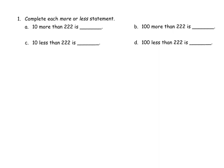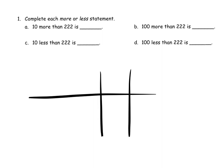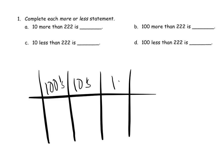So here it says complete each more or less statement. So we have 10 more than 222. The idea would be, we don't want necessarily for students to have to literally draw this out. But here's their 100s column, here's the 10s column, here's the 1s column. We could start off by modeling 222, and then 10 more would mean we would simply add one additional dot to the 10s column. So we could see that 10 more is 232.